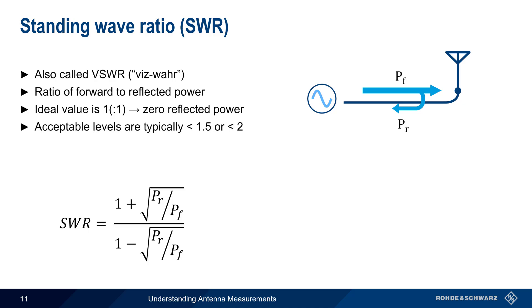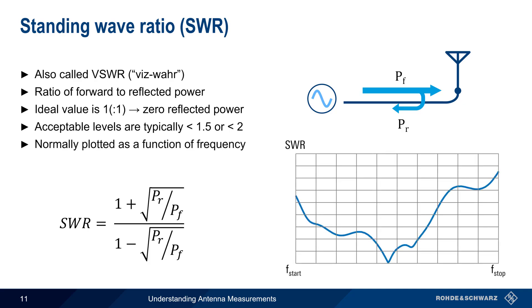But an SWR of less than 1.5, or less than 2, is acceptable in most applications. SWR can be shown as a value at a given frequency, but normally it's plotted as a function of frequency, and this is how SWR is displayed when using a VNA for antenna testing.